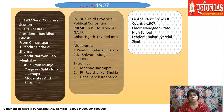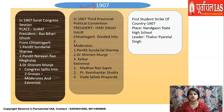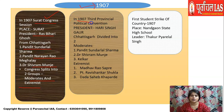In 1907, the Surat Split took place — the Congress session held at Surat saw a split in ideology, dividing Congress into two groups: Extremists and Moderates. The president was Ras Bihari Ghosh. From Chhattisgarh, Pandit Sundarlal Sharma, Narayan Rao Meghale, and Shivram Munjay attended the session.